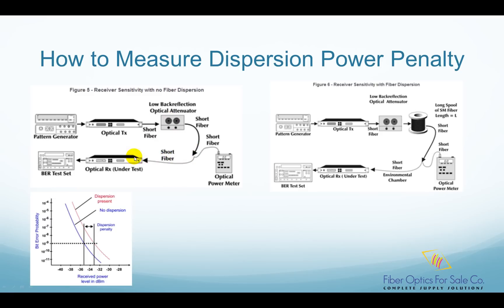We decrease the received optical power by increasing attenuation with the attenuator, and monitor the bit error ratio detected by the BER test set. You can print out the curve, which is the bit error ratio versus received optical power curve. This curve is the blue curve, as we previously discussed. This blue curve has no dispersion.